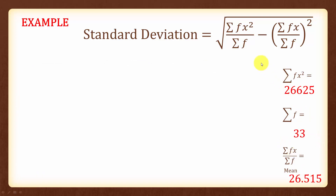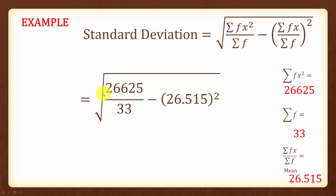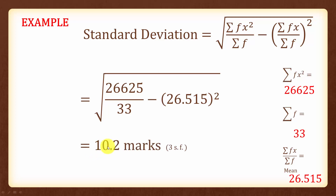Now let's input this data into the formula. We get the square root of 26,625 over 33 minus the mean (26.515) squared. Pressing calculate, the standard deviation equals 10.2 marks, rounded to 3 significant figures. Note that units are also necessary for standard deviation.